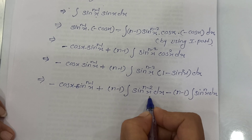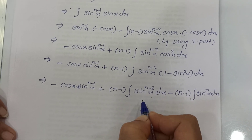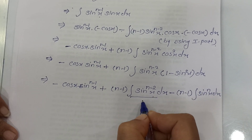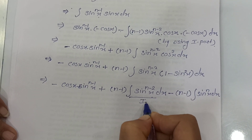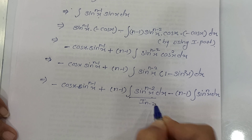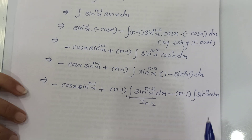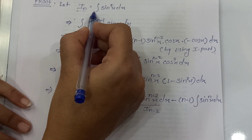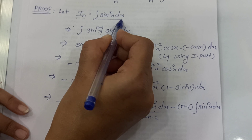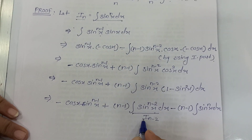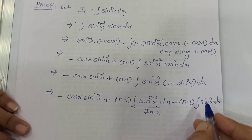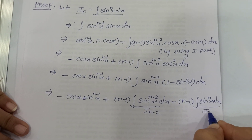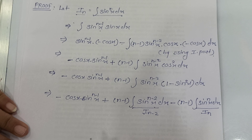This integration of sin raised to n minus 2 x dx is nothing but In minus 2, and the integration of sin raised to n x dx is nothing but In, since we defined In as the integration of sin raised to n x dx.